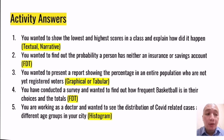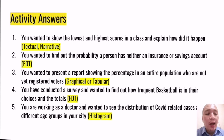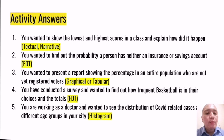You can use either graphical or tabular depending on what you want to point out. Next: you conducted a survey and wanted to find out how frequently basketball appears in choices of sports and totals — so you can use a frequency distribution table, since you want to see how frequent basketball is as an option. Finally: you are a doctor wanting to see the distribution of COVID cases between different age groups in your city — for that you use a histogram, because age is a continuous variable and you need to show the spread and dispersion of the data.